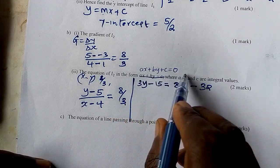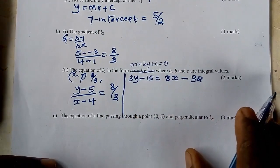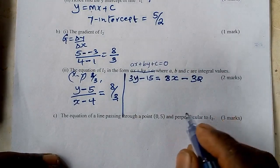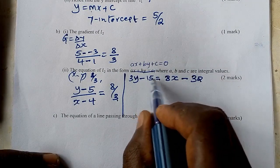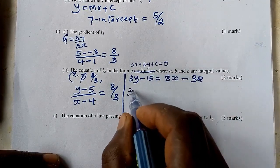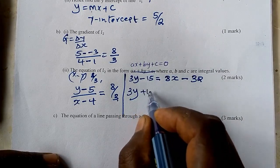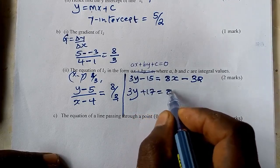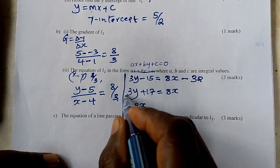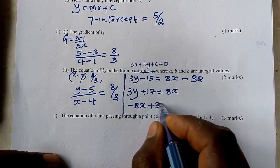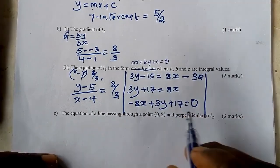Collecting like terms: bring 32 to the left side, so 32 minus 15 gives plus 17. We get 3y plus 17 equals 8x. Bringing 8x to the left gives negative 8x plus 3y plus 17 equals zero. So the equation of L2 is negative 8x plus 3y plus 17 equals 0.